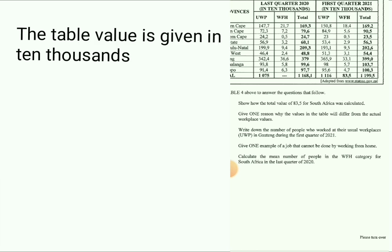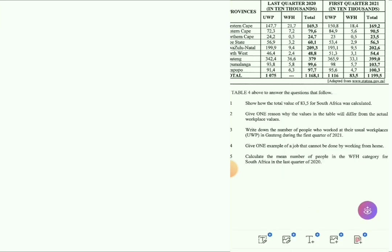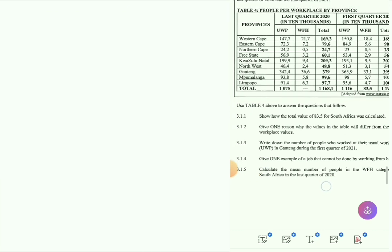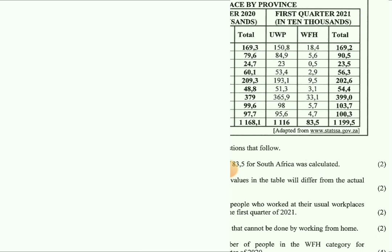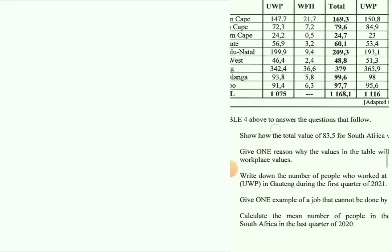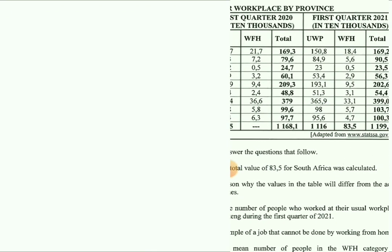Question 3.1.3: Write down the number of people who worked at their Usual Workplace (UWP) in Gauteng during the first quarter of 2021. We are going to focus on the first quarter of 2021, which is shown at the top of that column. We are talking about the UWP column for the first quarter of 2021.